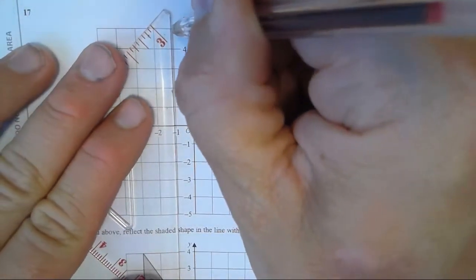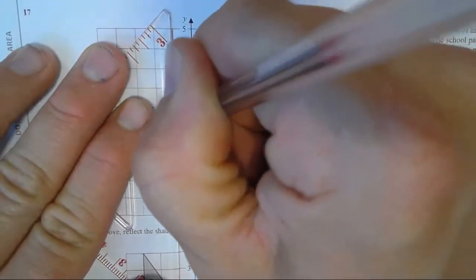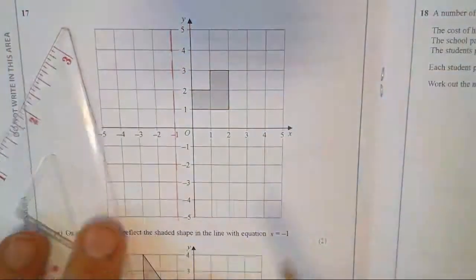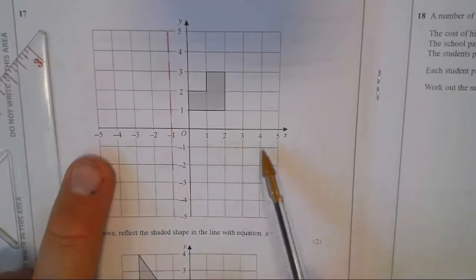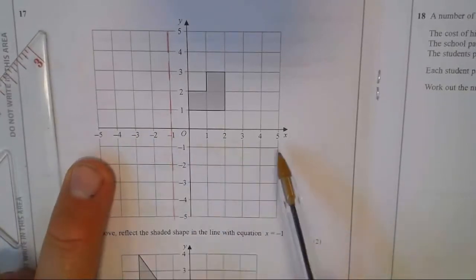Most people did get x equals minus 1 as this line, which is correct. The mistake that some people did was that they did this as x equals minus 1. That's y equals minus 1.